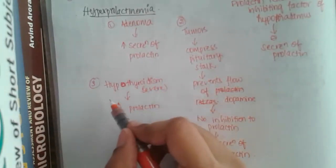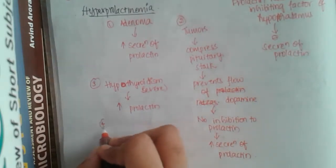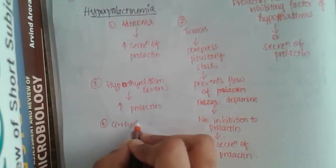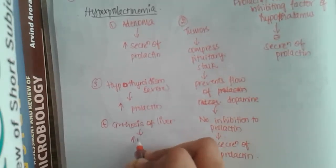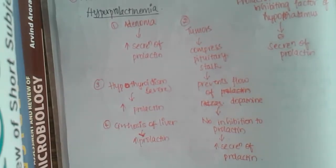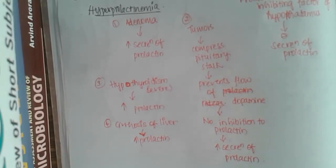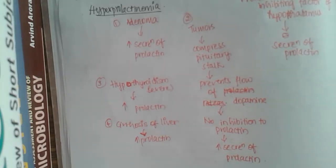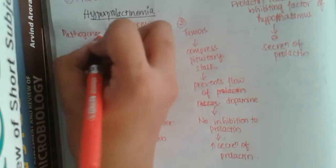Severe hypothyroidism leads to increased secretion of prolactin. The fourth cause is cirrhosis of the liver. In cirrhosis of the liver, there is increased prolactin due to growth factors secreted and also due to impaired metabolism of various substances in the body.